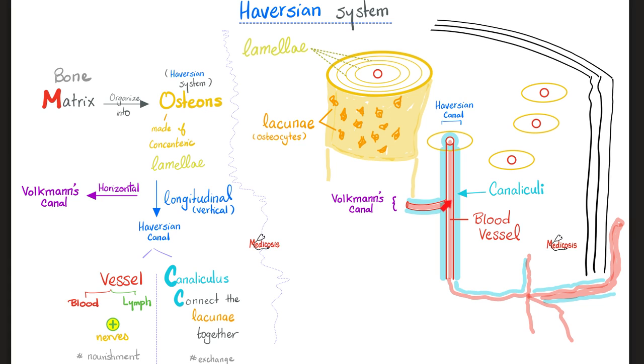Moreover, around each blood vessel, there is a canaliculus. The plural is canaliculi. Why do you need them? Because they connect the lacunae together. How can this lacunae communicate with this lacunae, with this lacunae? Canaliculi, which are small canals. This is a big canal, Haversian canal. This is a big canal, Volkmann's canal. But this is a small tiny canal, canaliculus. So canaliculus is for connection and communication between the lacunae. And this is the outer shell of your bone. It's going to be covered by periosteum, as you know. This is super important, so please pause and review.